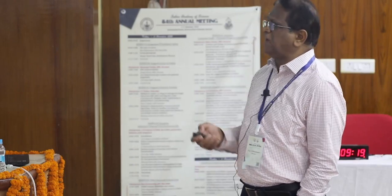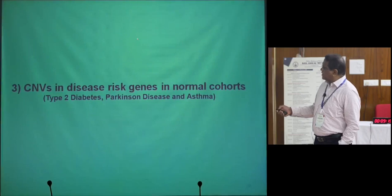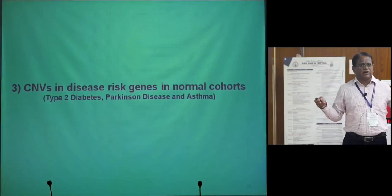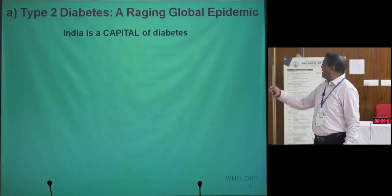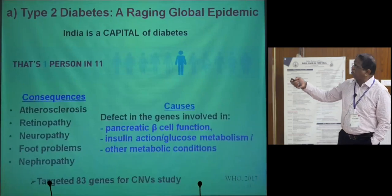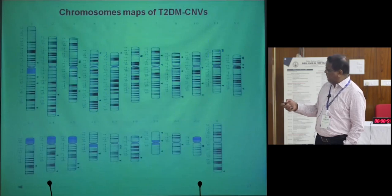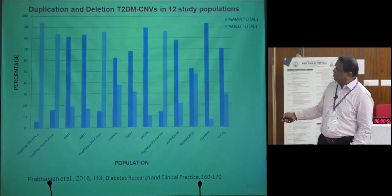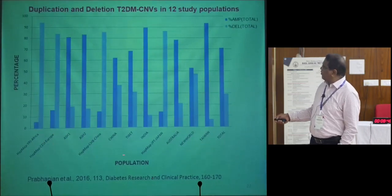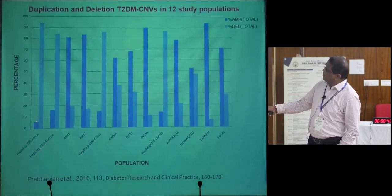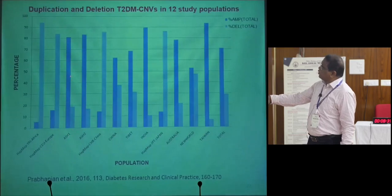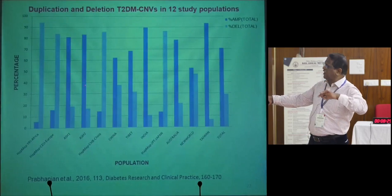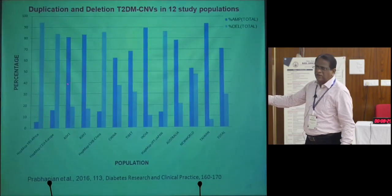We also analyzed these 44,000 CNVs in relation to specific diseases, wanting to identify disease-specific hits. I will take three diseases. Looking at the data across all 12 populations, CNV amplifications — that is duplications — were less population-specific overall. In the Ashkenazi Jewish population, there are more duplicated CNVs seen in type 2 diabetes genes.